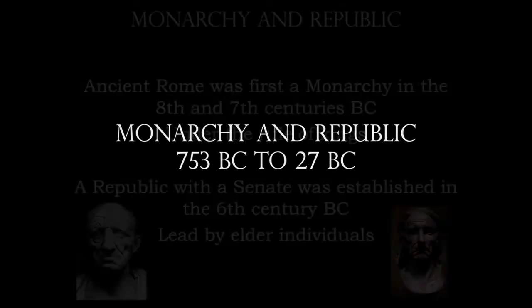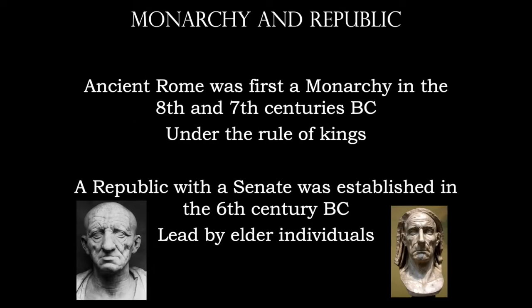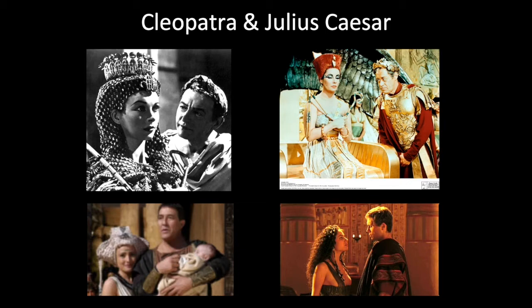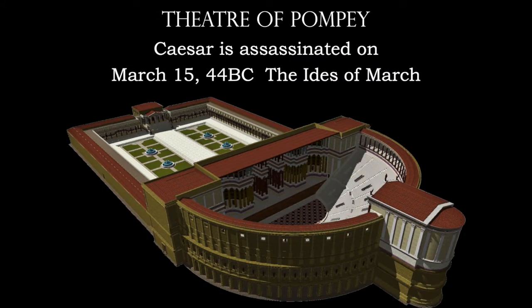Way back during the monarchy and Republic dating back from 753 BC, we see that ancient Rome was ruled by kings. In the 6th century, we begin a Republic with a Senate, led by older individuals. We think of older individuals as very wise. This was a multicultural society, and what mattered most was whether you were a Roman citizen or not. Julius Caesar becomes dictator in 48 BC, and of course there is his famous love affair with Cleopatra. Caesar is going to be assassinated on March 15th, 44 BC, at the theater of Pompeii — this is the Senate floor. We also call this day the Ides of March.